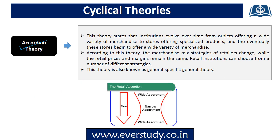The next theory is the accordion theory. When a new retailer enters the market, they carry products across different categories and sell them under one roof — like a general store near your home that stocks all daily requirements but offers limited variety in any single product. Gradually, they may become a specialist store — for example, only gift items, shoes, or stationery — stocking the full variety of one special category. Later, as specialist retailers mature, they begin adding other products too, becoming a large general store with many varieties. Some retailers become category killers, offering every product with every variety, eliminating competition. This theory is also called the general-specific-general theory.